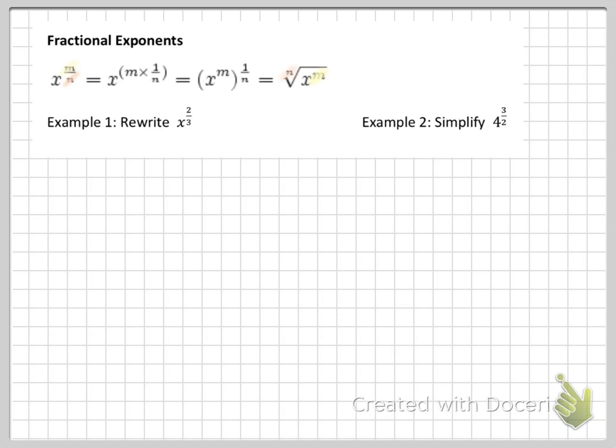So when we write x to the 2 thirds, the bottom is the root, cubed root, of x squared. So you do 4 to the 3 halves. The bottom is the root, square root of 4, and the top is the exponent.